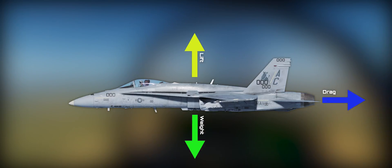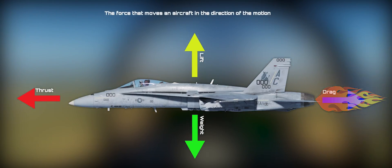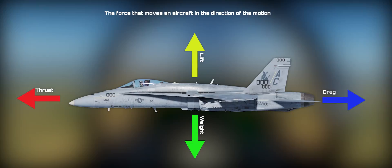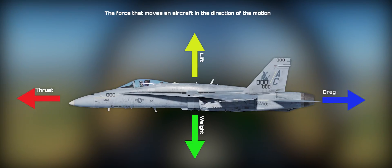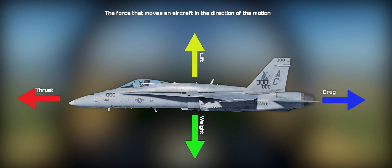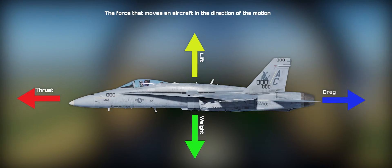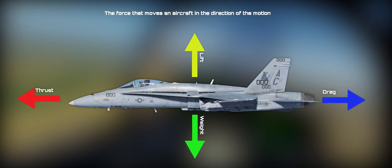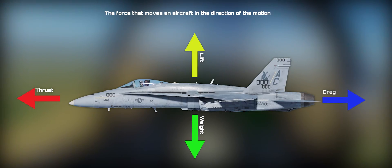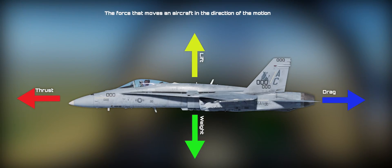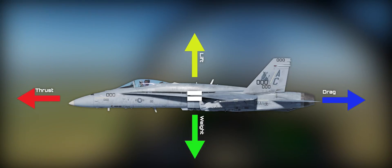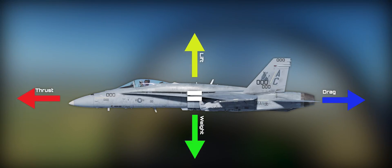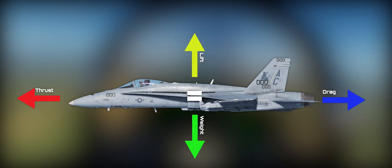And last, we have thrust, the force that moves an aircraft in the direction of motion. We typically reference this in jet fighters as pounds of thrust. The more you have, the faster you go. When lift equals weight and thrust equals drag, this will result in straight and level unaccelerated flight.